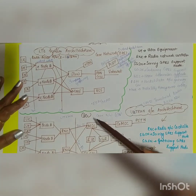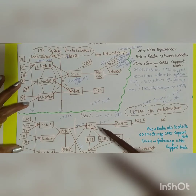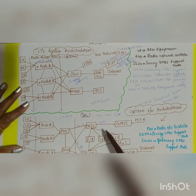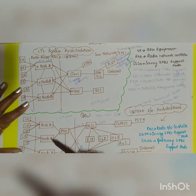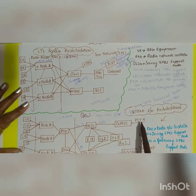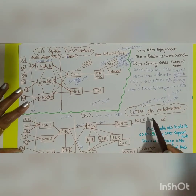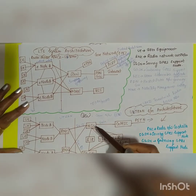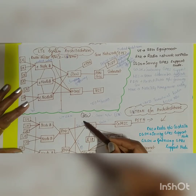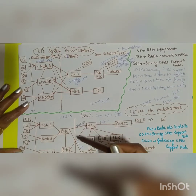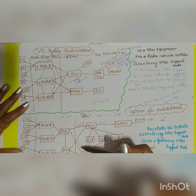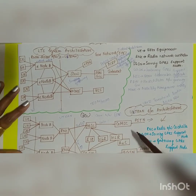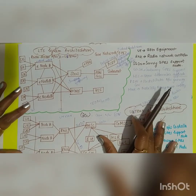A key difference in 3G is that voice and data are separated. Voice calls pass through the RNC to the MSC and then to the PSTN via the IuCS (circuit-switched) interface, while data uses the IuPS (packet-switched) interface. This is the major change in the UMTS system.